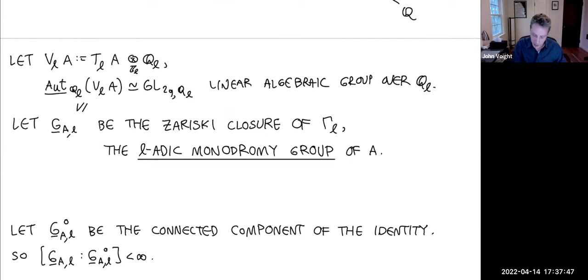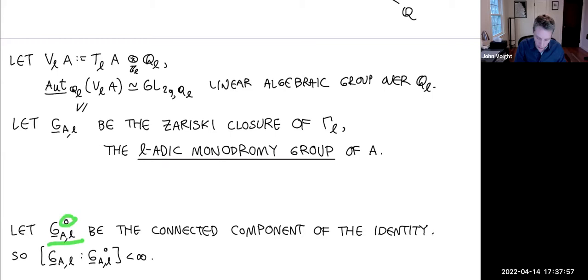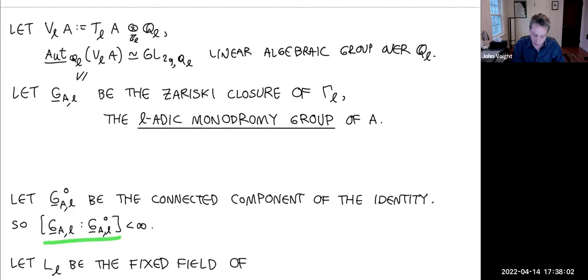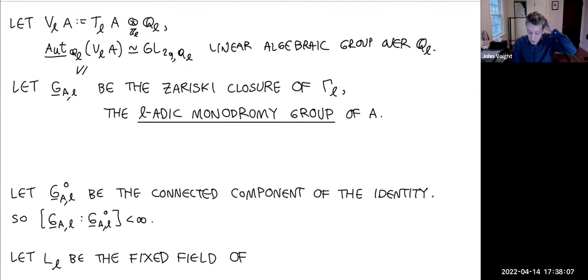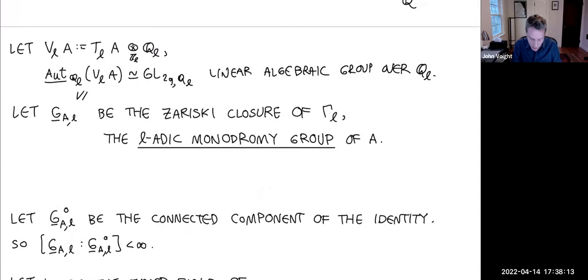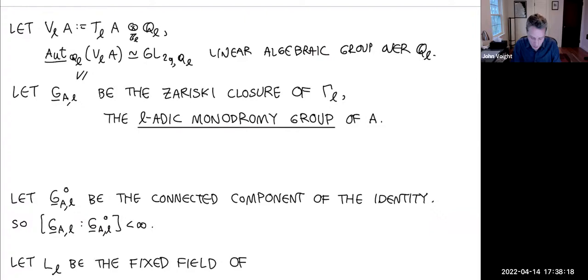To understand this linear algebraic group: every linear algebraic group has a connected component of the identity, G^0_{A,ℓ}, which has finite index. There's a finite union of cosets describing the whole group. Once we have G_{A,ℓ}, I want to see how it fits into the field diagram.